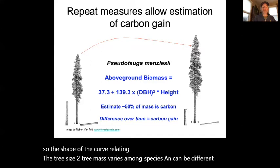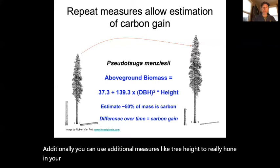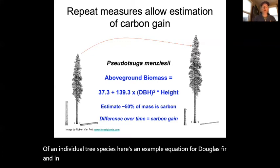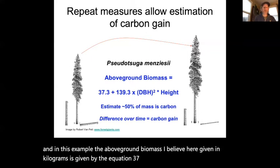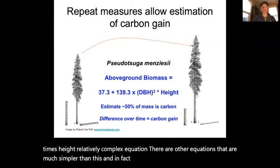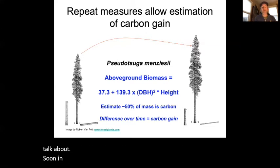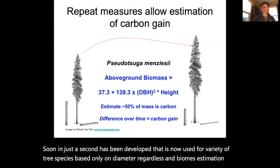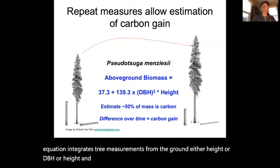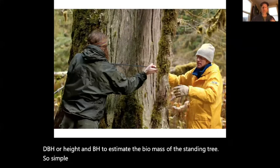You can use additional measures like tree height to refine your estimate of biomass for an individual tree species. For example, the above ground biomass of Douglas fir in kilograms is given by the equation: 37.3 plus 139.3 times DBH squared times height. A national set of equations has also been developed for a variety of tree species based only on diameter.